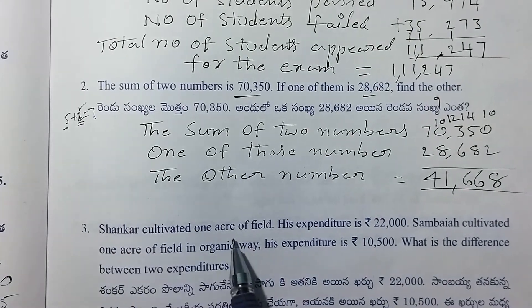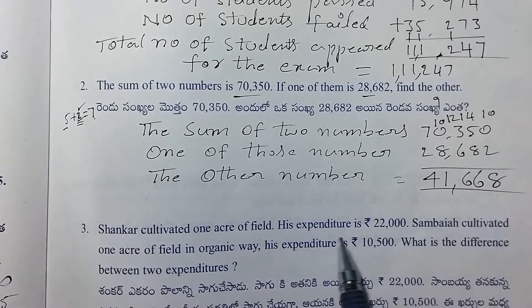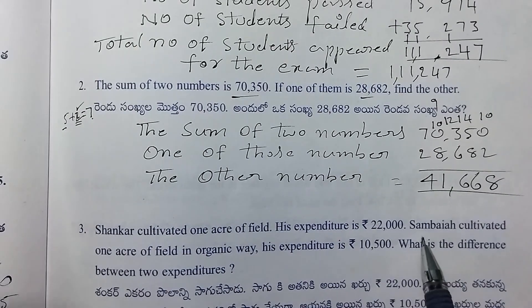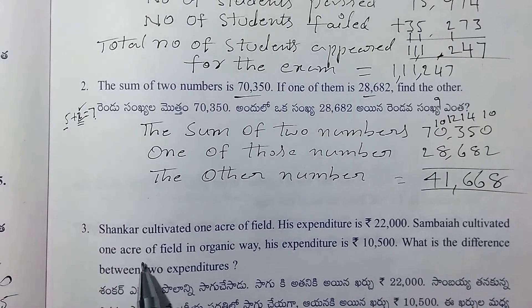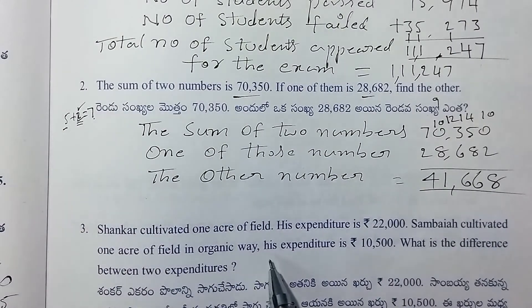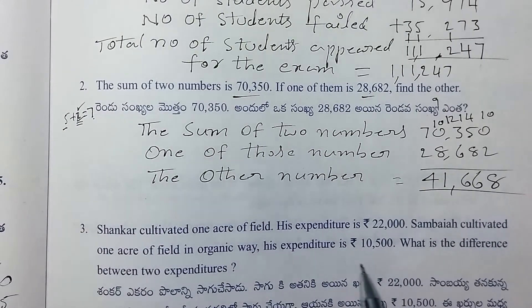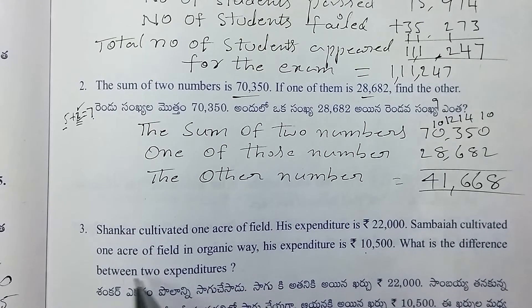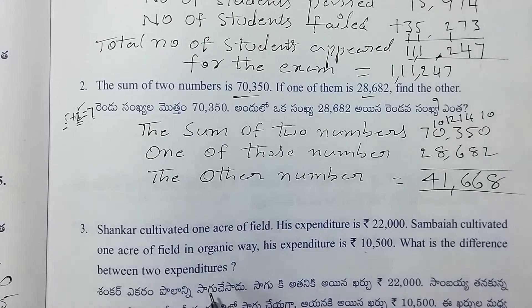Sankar cultivated one acre field. His expenditure is 22,000. Sambaya cultivated the same acre field in an organic way. His expenditure is 10,500. What is the difference between the two expenditures?